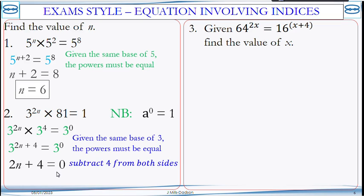So 2n plus 4 equals 0. We solve it by subtracting 4 from both sides. So when you work it out, finally, n will be equal to negative 2. When you divide 2n by 2 and divide negative 4 by 2, you have n equals negative 2.